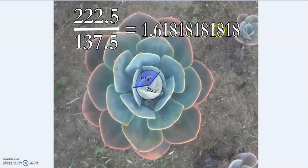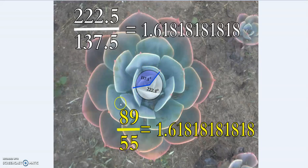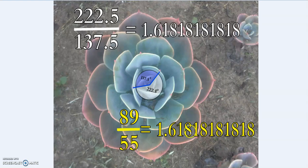222.5 over 137.5 equals 1.6181818..., which is essentially 1.61803398 — phi. The small margin of error is within measurement tolerance. If you had precise equipment to measure the exact angle, it would likely be even closer. This connects to the Fibonacci spiral and Fibonacci numbers: 1, 1, 2, 3, 5, 8, 13, 21, 34, 55, 89 — very well known in relation to phi.